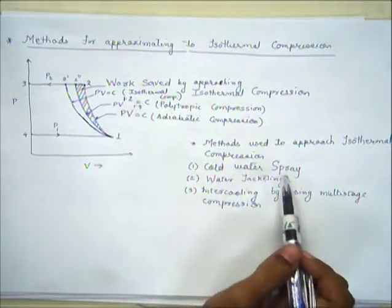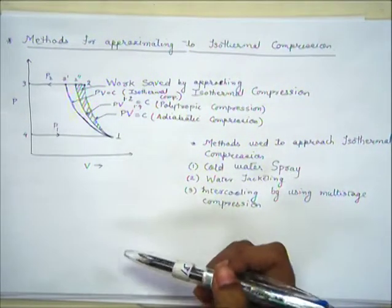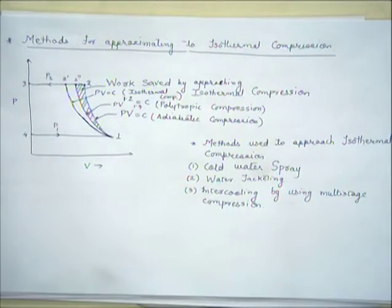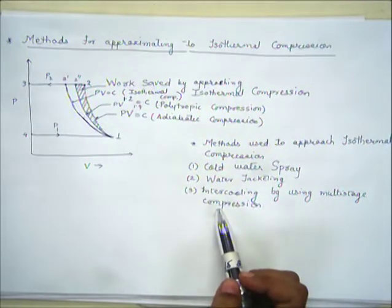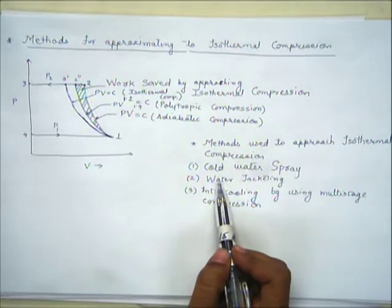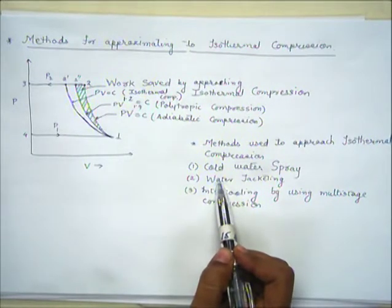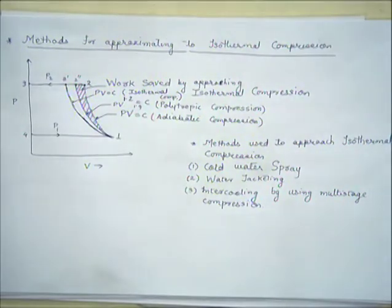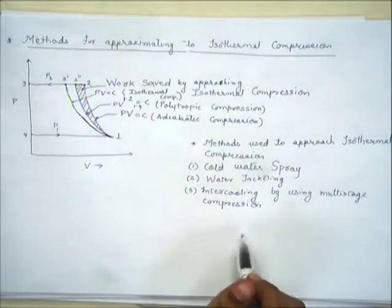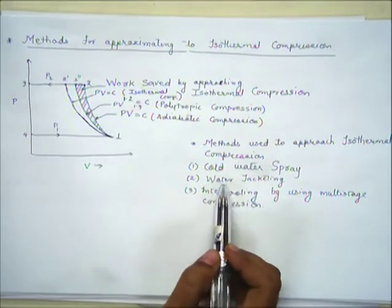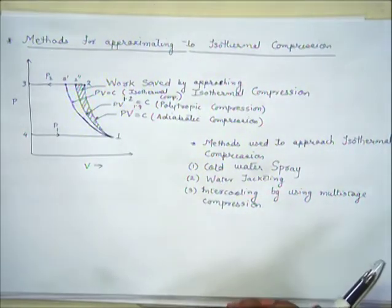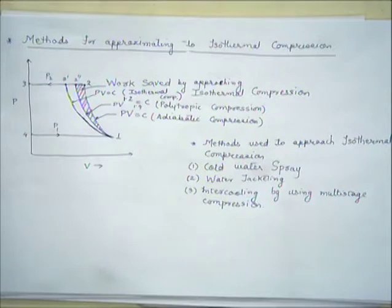One method for approximating isothermal compression is cold water spray — we spray cold water on the outer side of the cylinder, thereby cooling the air within. A second method is water jacketing, where a water jacket surrounds the cylinder and cold water circulates continuously, with cold water going in and hot water coming out to cool the cylinder. A third method is intercooling using multi-stage compression.